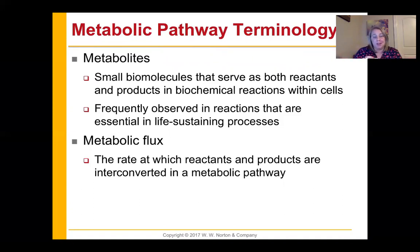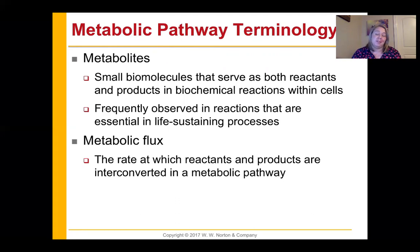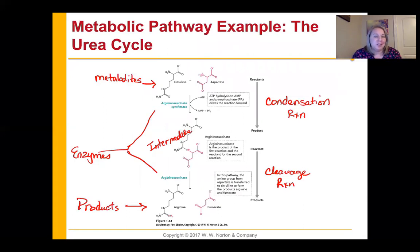Depending on where you're looking inside a pathway, something might be a reactant here but a product there — so we call them metabolites to generalize. There's also metabolic flux — the rate at which reactants and products are interconverted. Most pathways are not a one-way street; we can usually go in both directions. Why you would push a reaction in one direction versus another depends on the environment — for example, whether you just had lunch or have been starving for three days.